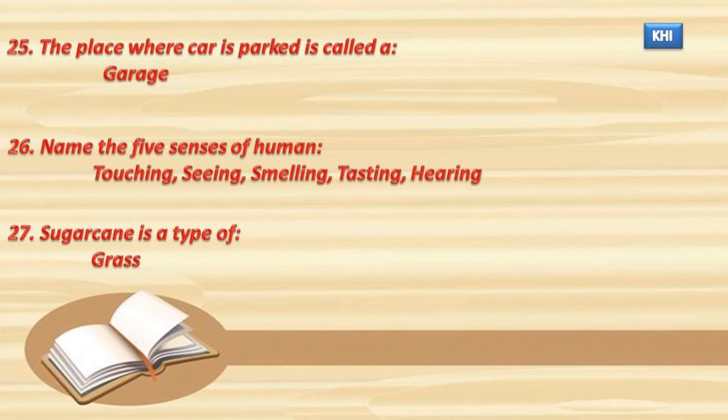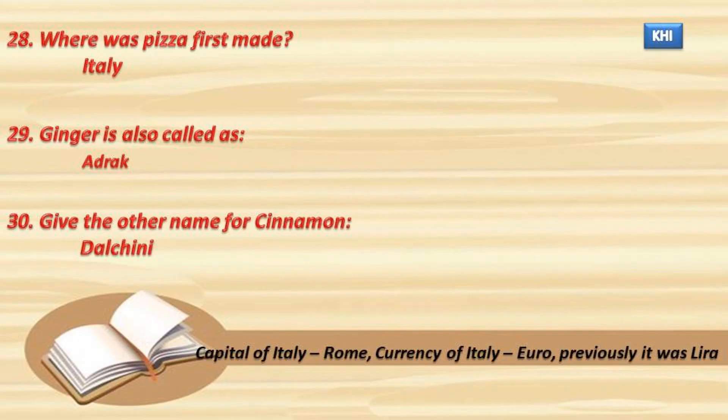27. Sugar cane is a type of Grass. 28. Where was pizza first made? Italy.